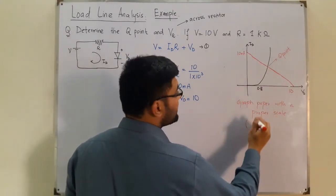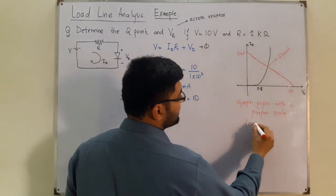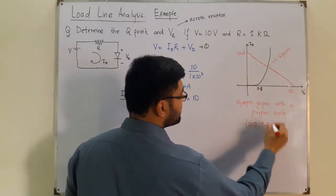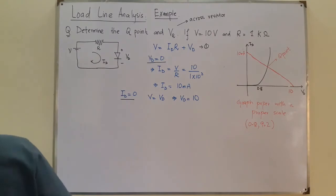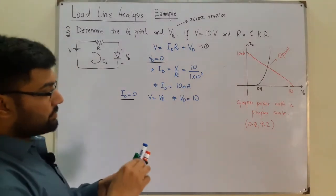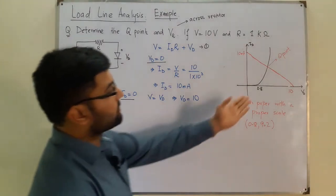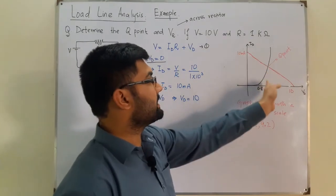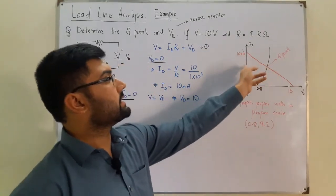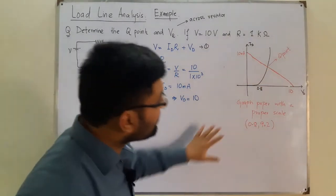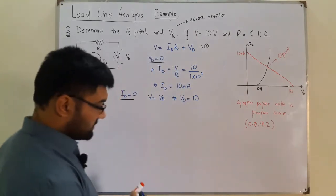VD would be equal to 0.8 and ID would be equal to 9.2. Let me check - yes, 0.8 and 9.2. Have a look over here, I'm getting something 0.9 or 10, and this I'm getting 5 or something. So you draw with a proper scale - these are the coordinates of the Q point.